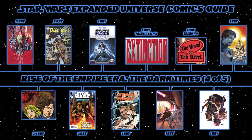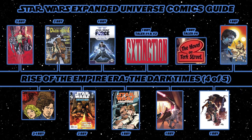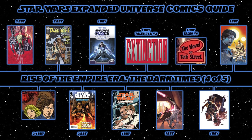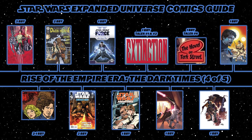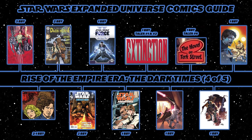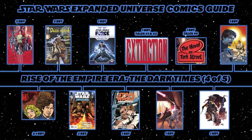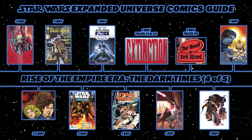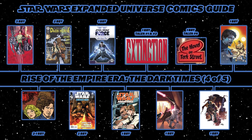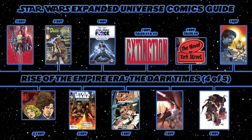Next, begin the Empire series with issues 1 through 4: Empire Betrayal. Then back to Star Wars Tales number 6 for The Hovel on Turk Street. Then the five-issue miniseries Underworld: The Yavin Vassilika, recounting an adventure to retrieve the fabled Yavin Vassilika for competing Hutts. Continue with Empire: Darklighter, featured in issues 8, 9, 12, and 15.